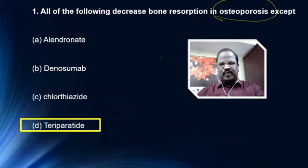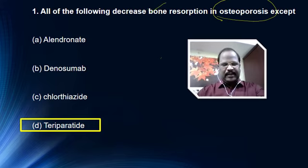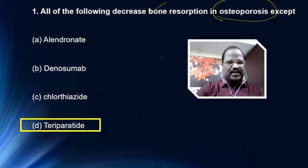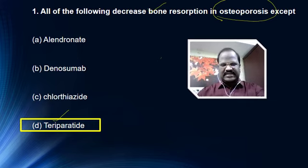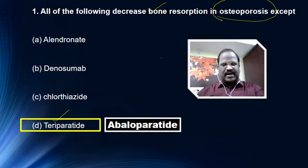Some drugs promote osteoblastic activity, and some drugs decrease bone resorption. Teriparatide, a parathormone analog, has osteoblastic action, thereby promoting bone formation, and is useful for treatment of osteoporosis. We have one more important parathormone analog called abaloparatide.